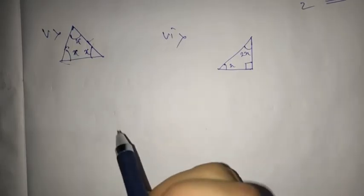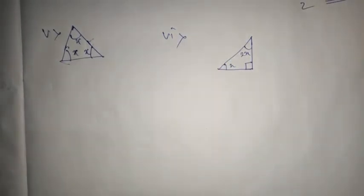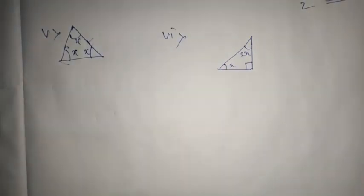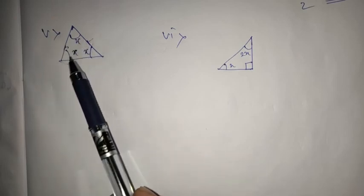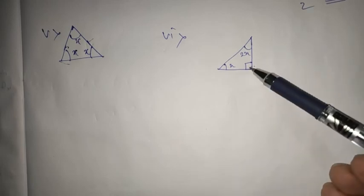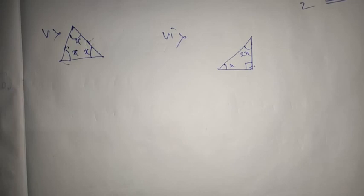We have two more questions left — number five and number six. Using the same property, you try them yourself. If there's any problem, you can ask me. For question five, all interior angles are x, so x plus x plus x equals 180, giving 3x equals 180, so x equals 60 degrees. For question six, the perpendicular sign means 90 degrees — add it up using angle sum property and you'll get the value of x easily. In the next class, we will proceed with question number two of Exercise 6.3. Till then, do your home assignment and do not forget to practice. Thank you, everyone.